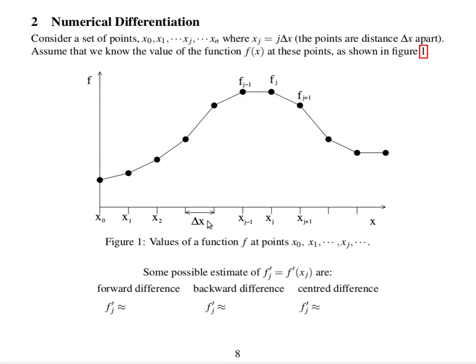We want to find the gradient f dashed at position xj. So, there are three obvious ways we can do it. We can use a forward difference, a backward difference, and a center difference. For a forward difference, we look at this point and we look forward. So, we get f dashed of j, the gradient here, is equal to that value minus that value divided by the distance between them.